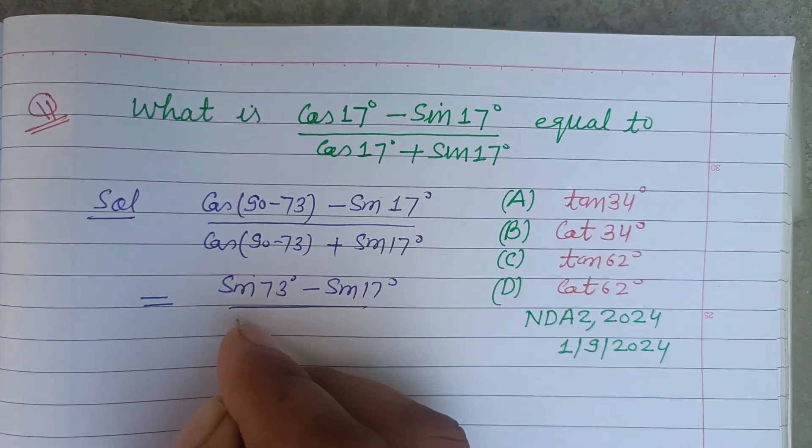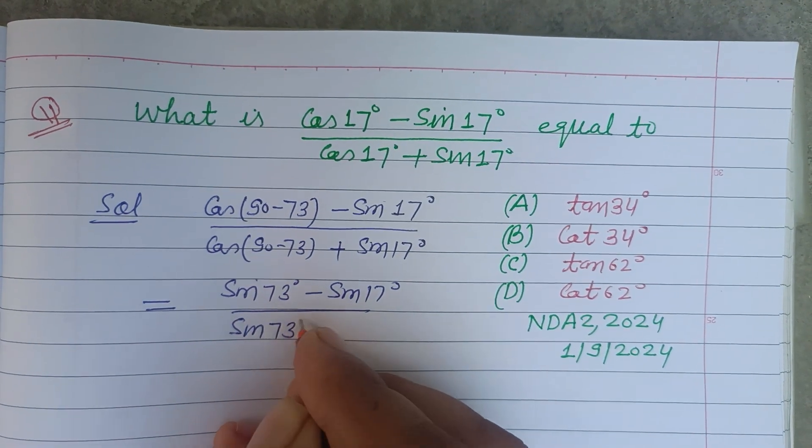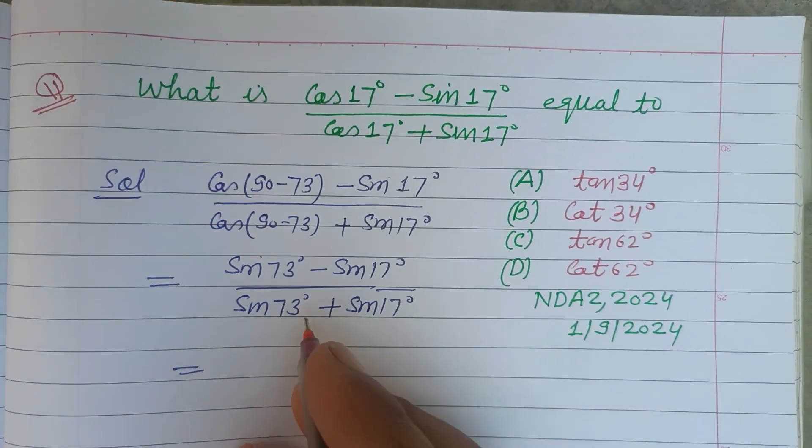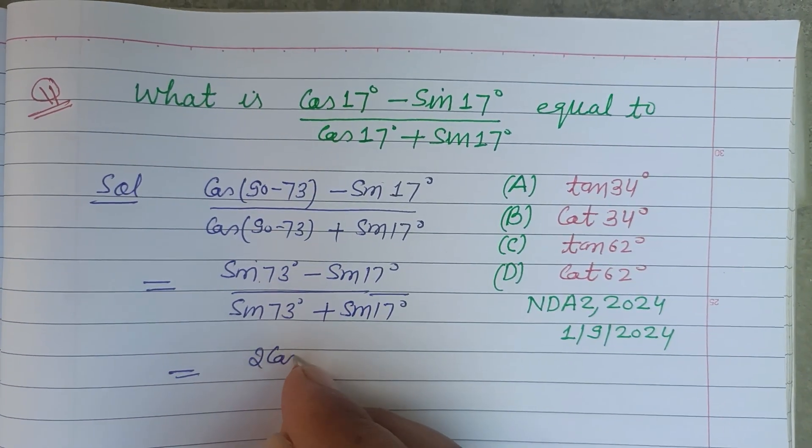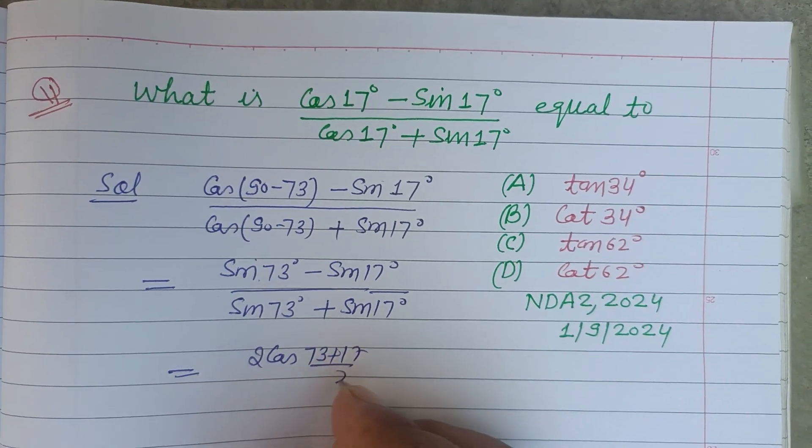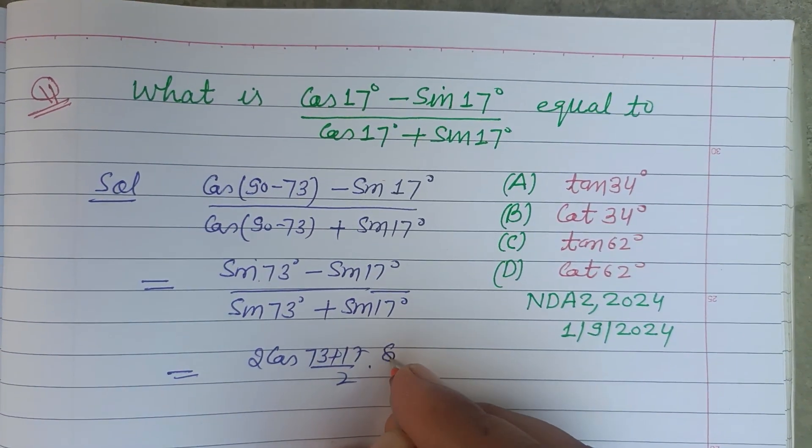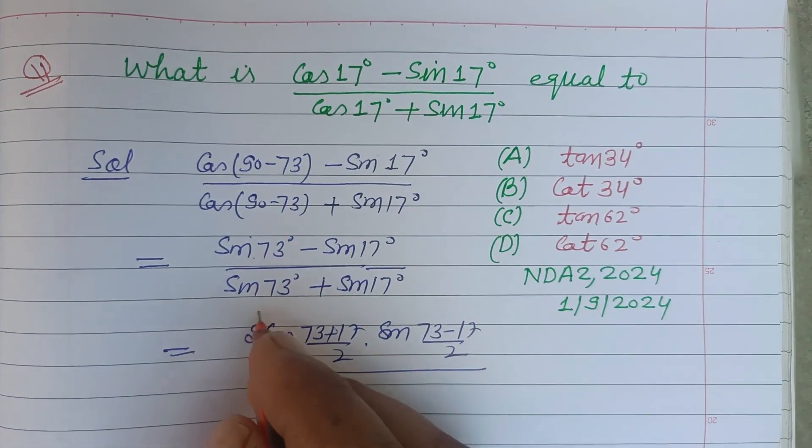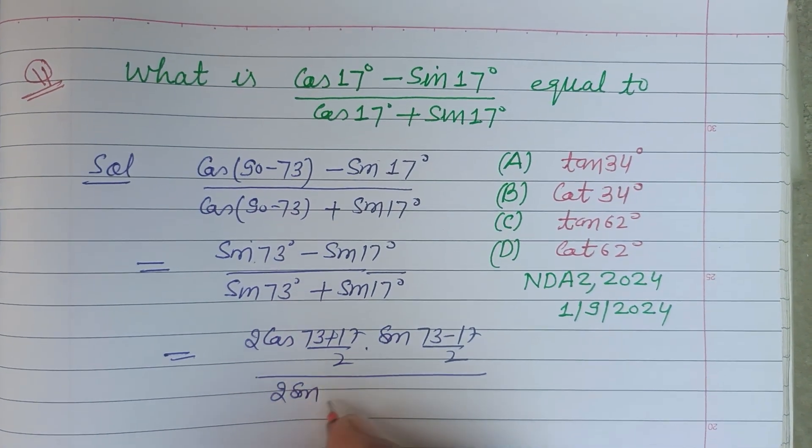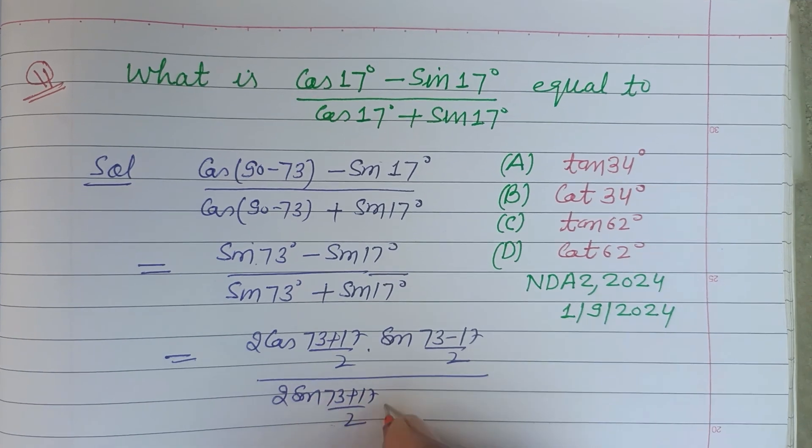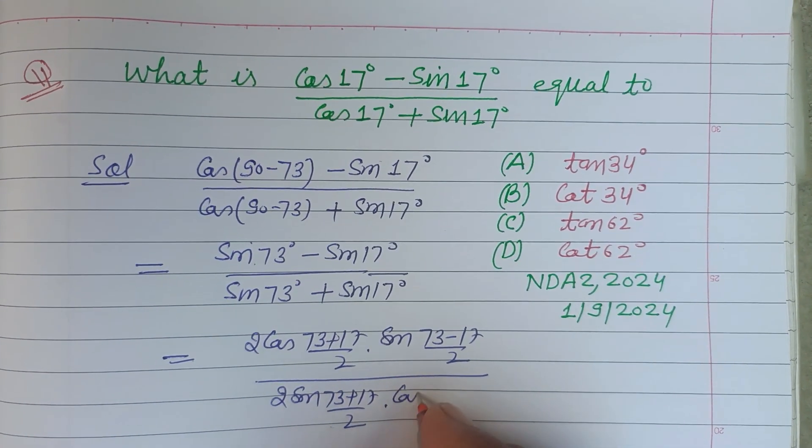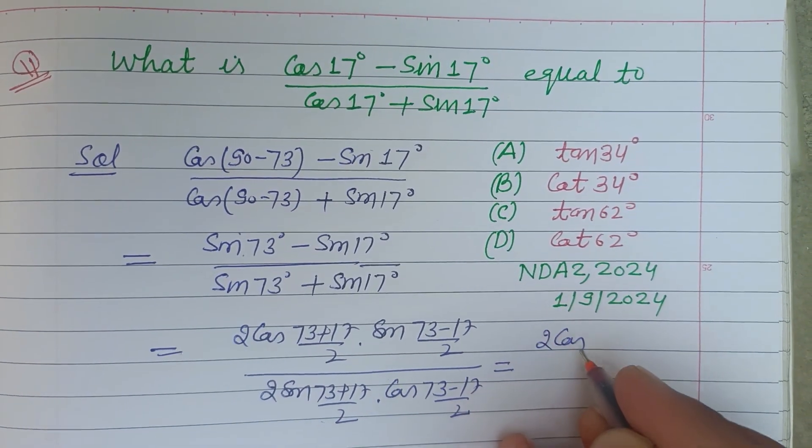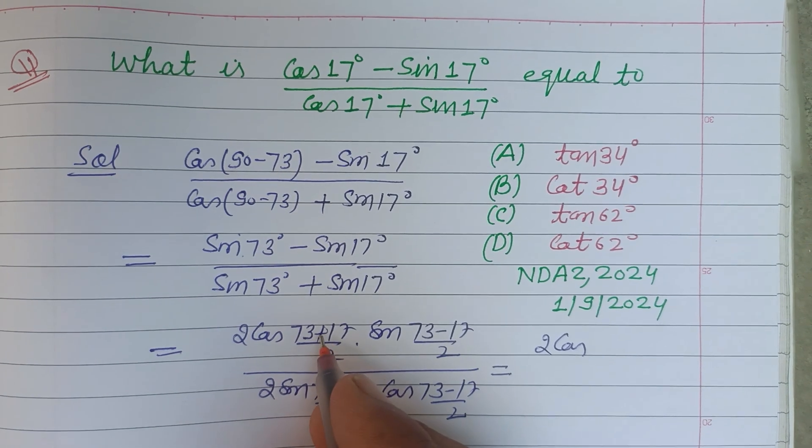Now we use sin C minus sin D which is 2 cos(C + D)/2 into sin(C - D)/2 upon sin C plus sin D which is 2 sin(C + D)/2 into cos(C - D)/2. And this will be 2 cos((73 + 17)/2)